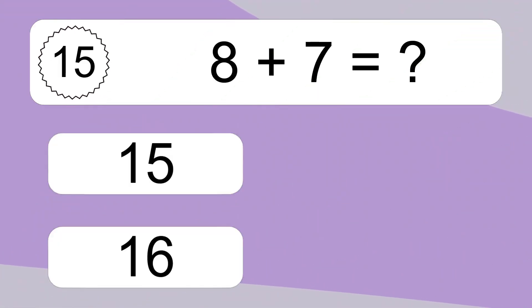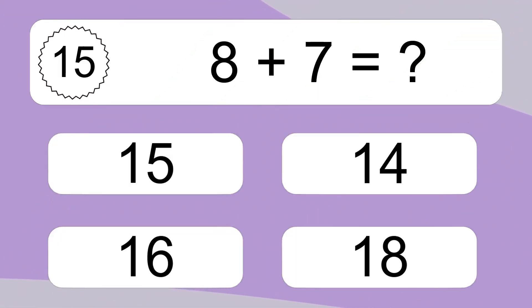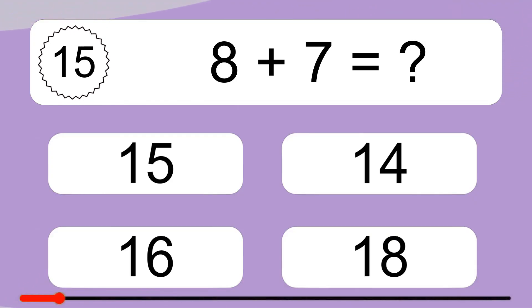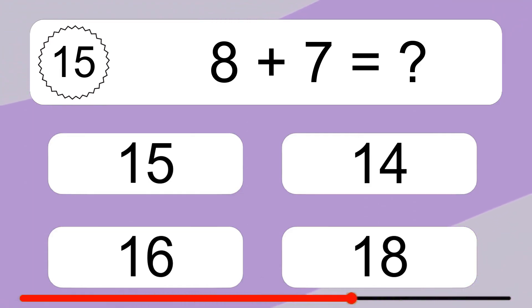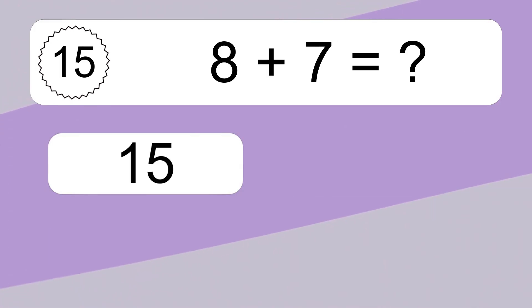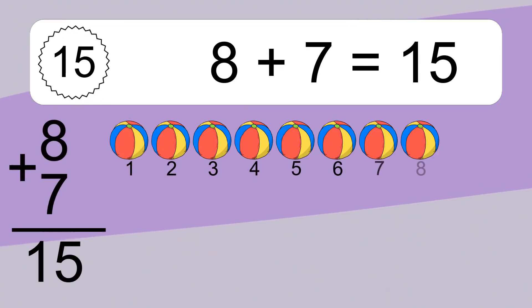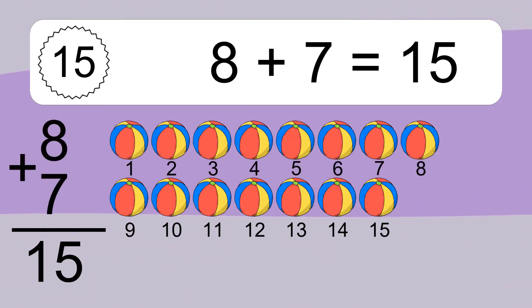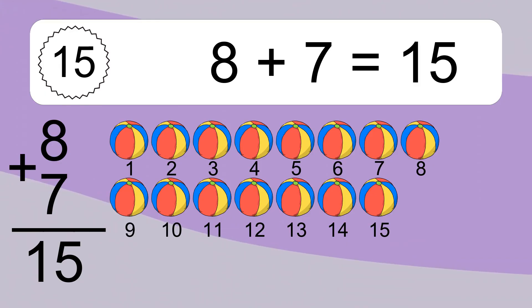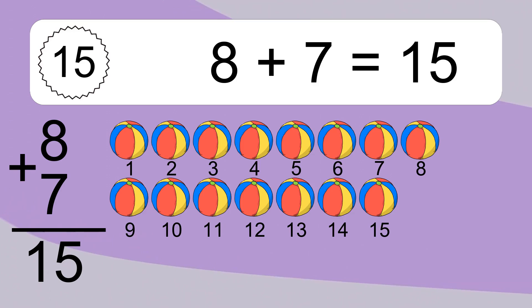8 plus 7 equals what? 8 plus 7 equals 15. Let's count it: 1, 2, 3, 4, 5, 6, 7, 8, 9, 10, 11, 12, 13, 14, 15.